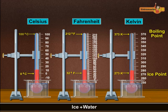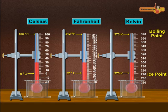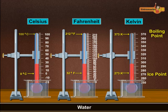If the temperature of water is 25 degrees Celsius on the Celsius scale, then the reading on the Fahrenheit scale is 77 degrees Fahrenheit and on the Kelvin scale is 298 Kelvin.